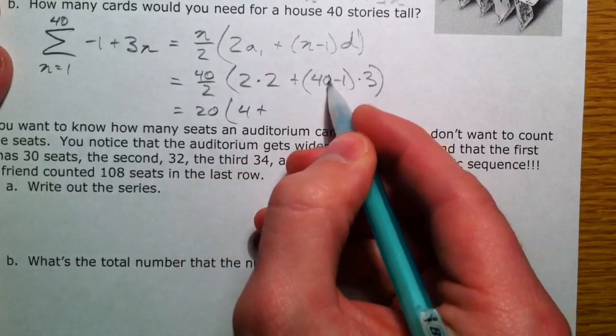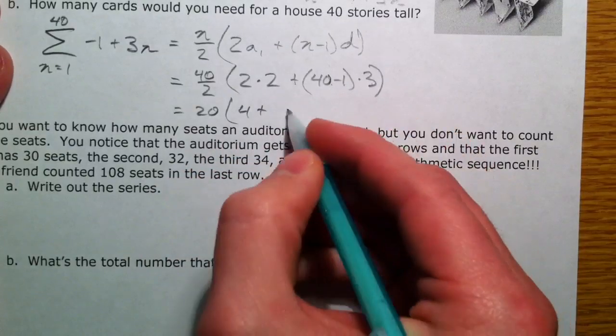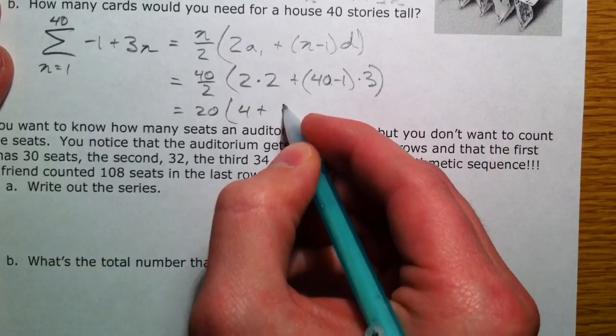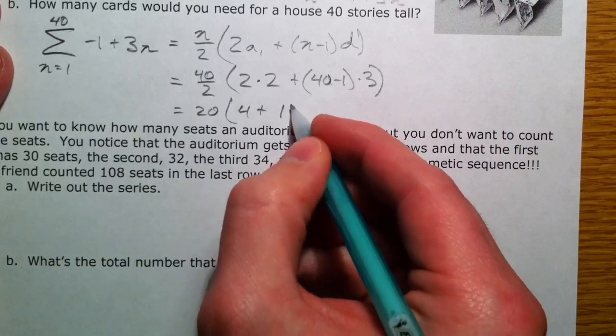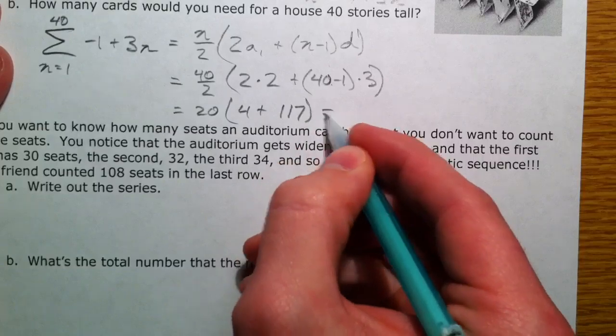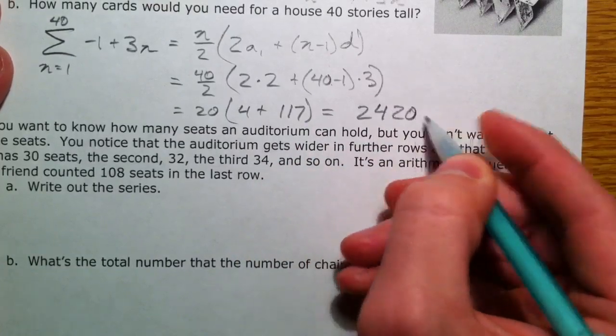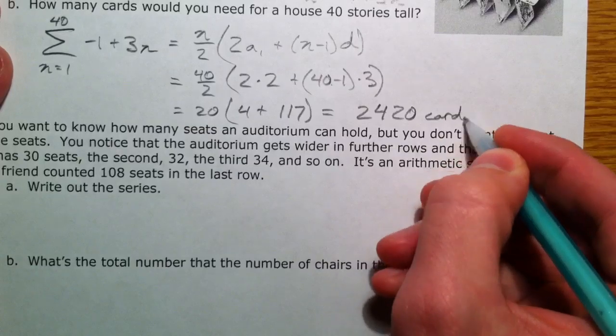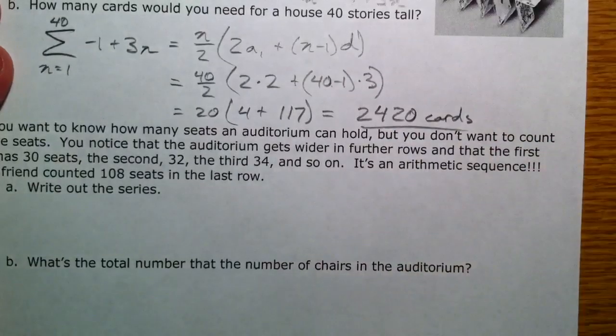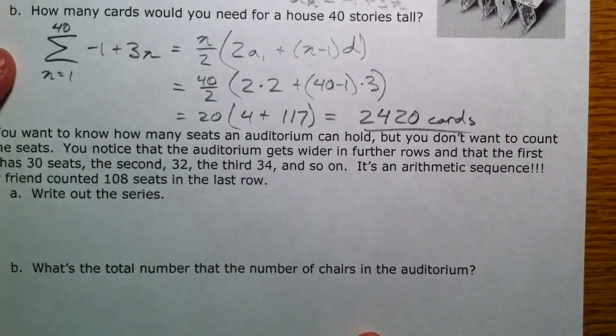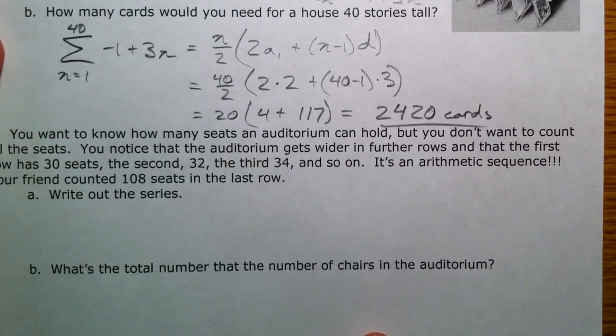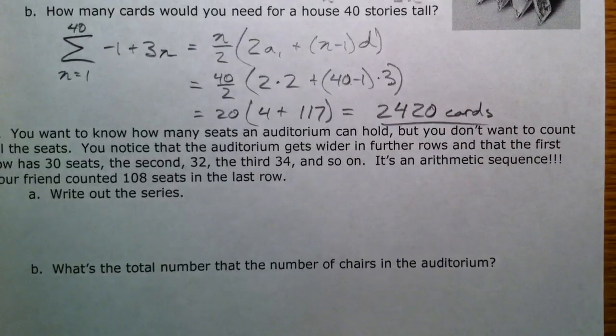So, 4 plus 39 times 3. So, 3 less than 120, 117 equals 2,420 cards. It's a lot of cards. Not to mention, it would be extremely difficult to make one that's 40 stories tall. So, let's try another one and we'll use the second equation.